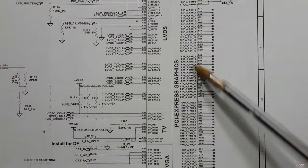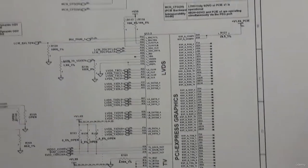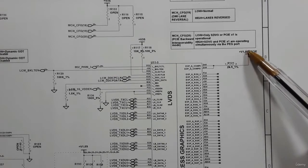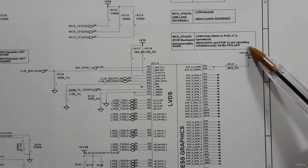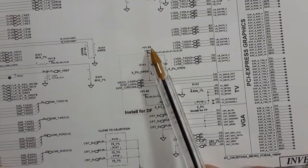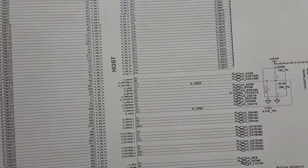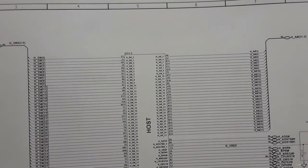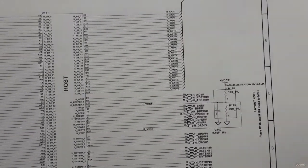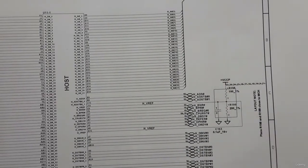Here we have plus 1.5 volts, which is one of the voltages applied to the GMCH. We also find 1.8 volts and plus 1.5 volts. Here in part one of the GMCH we have the plus VCCP — the power supply VCCP. The GMCH has many kinds of power.